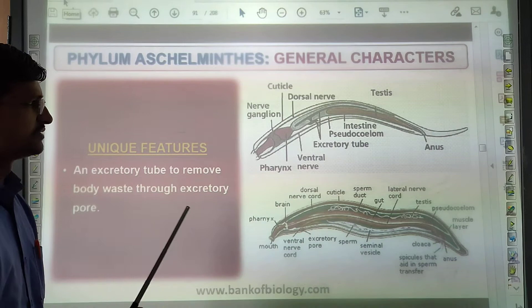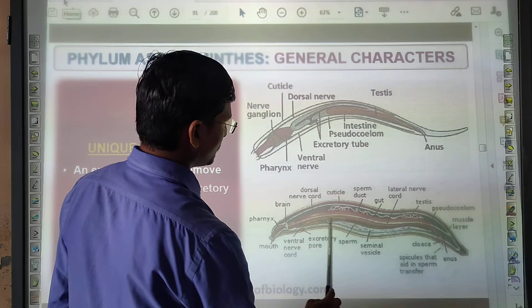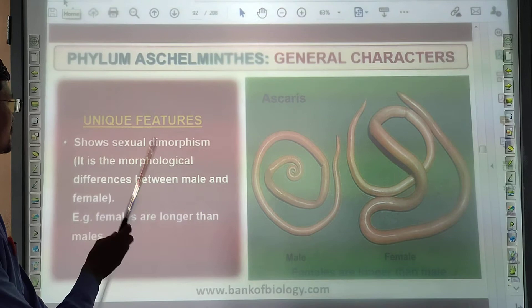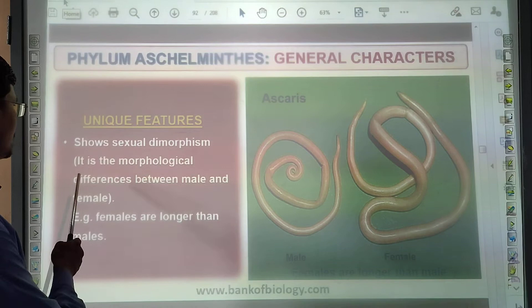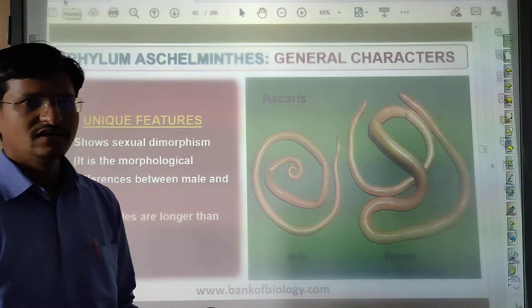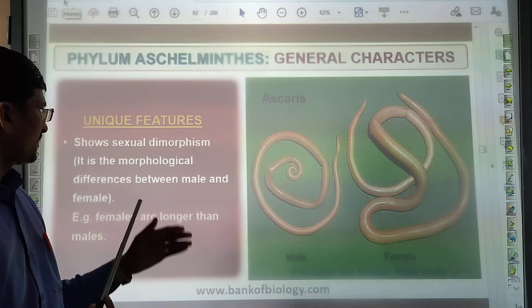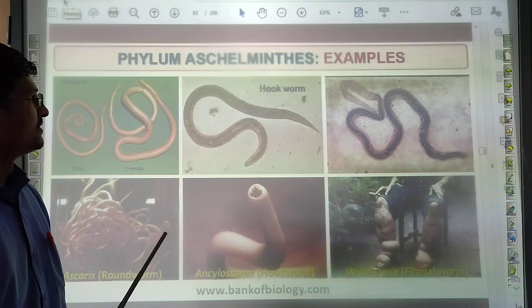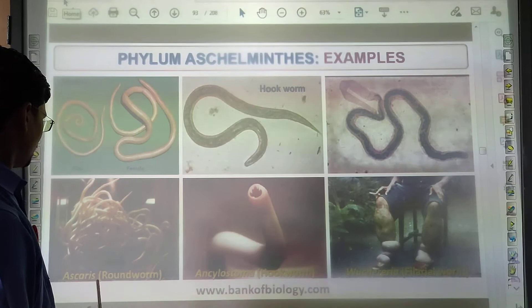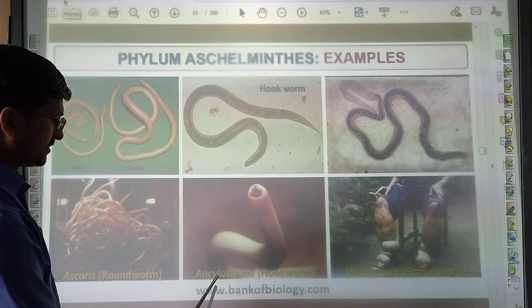The body has a longitudinal musculature. There is sexual dimorphism — that is the morphological difference between male and female, which can be easily distinguished. Dimorphism means the sexes are morphologically separated and can be easily identified. Examples include Ascaris, which is a round worm type.